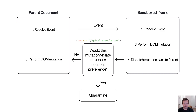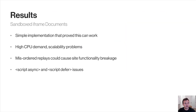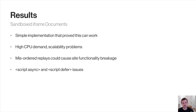If the mutation does not violate the user's consent preference, we proceed with performing it on the parent document. However, this solution didn't scale well enough to meet performance demands. As a site included more and more scripts, we were syncing too many events back and forth, and memory usage and CPU requirements became untenable. Our initial attempt could cause site functionality to break — in layout or functionality — if DOM mutations were replayed in the wrong order. This meant we could not support script async or script defer in a high-performance manner.